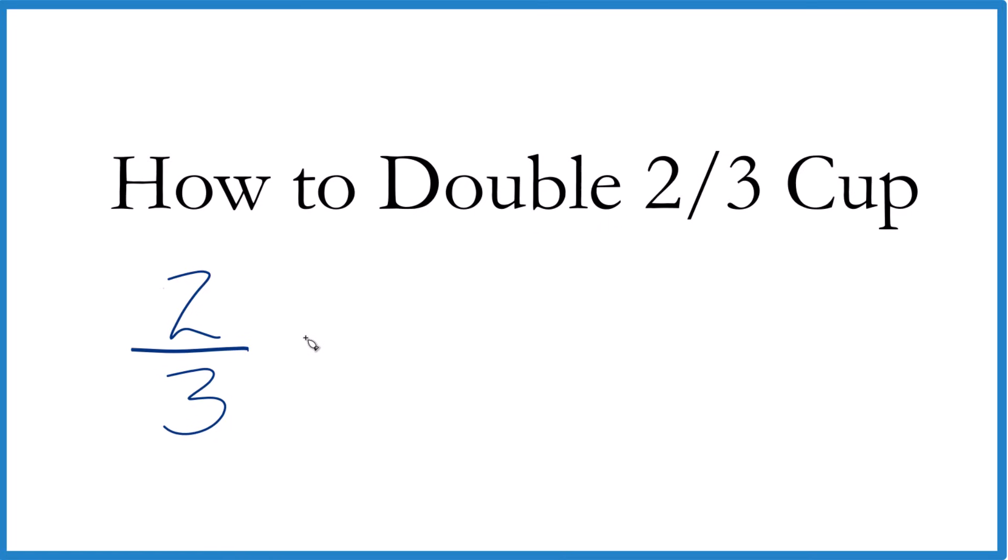So what we could do is just multiply it by two. That would be doubling it. And you can think of this as two over one if you want. It's still two. Two times two, that equals four. And three times one is three.